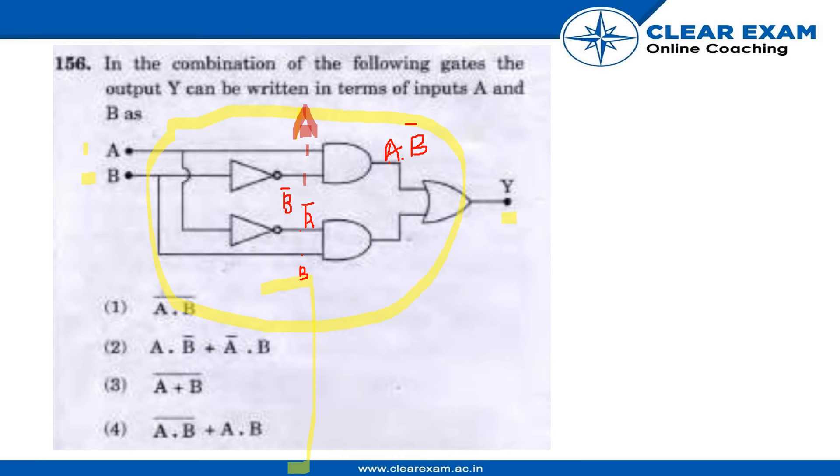When we apply the AND gate over this point, it comes out to be A naught dot B. So the Y value will come out to be...